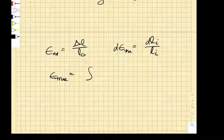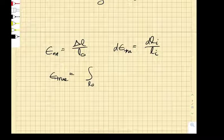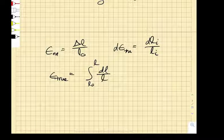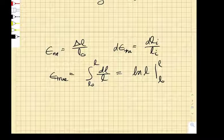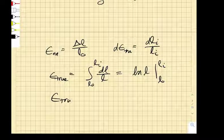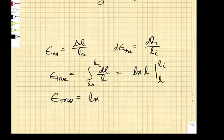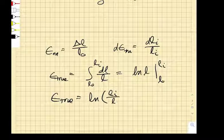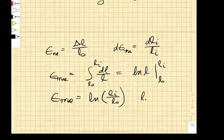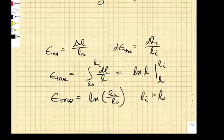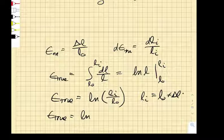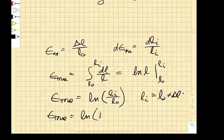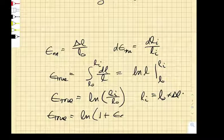which is just going to be the natural log of L evaluated at L0 L. And this true strain then simply becomes the natural log of LI over L0. Well, LI is equal to L0 plus delta L. So the true strain is simply equal to the natural log of 1 plus the engineering strain.